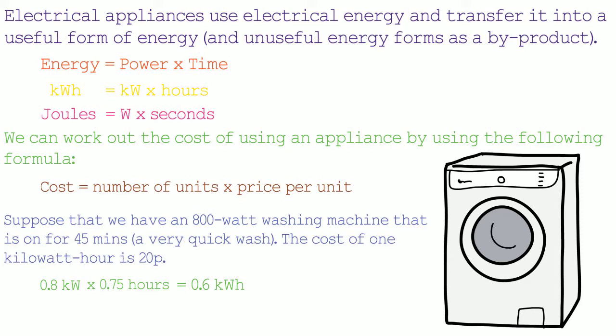To work out how much this costs, we multiply the energy used — 0.6 kilowatt hours — by the price per kilowatt hour, which is 20p. So 0.6 kilowatt hours times 20p gives us 12p. The cost of having this washing machine on for 45 minutes is 12p. Now let's move on to mains electricity.